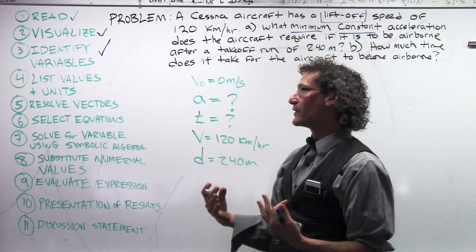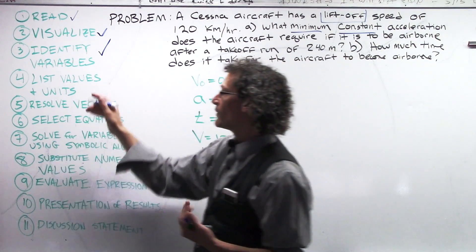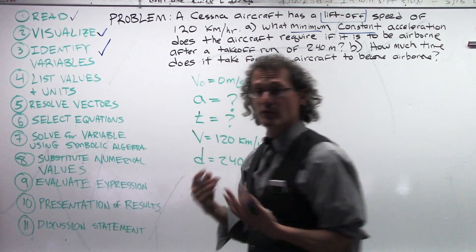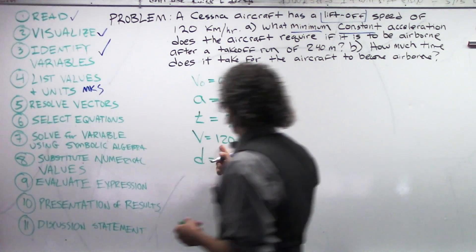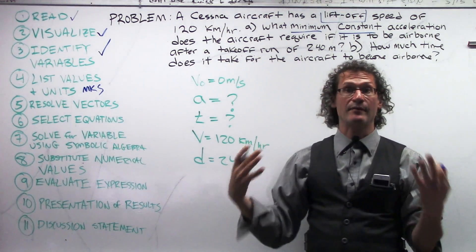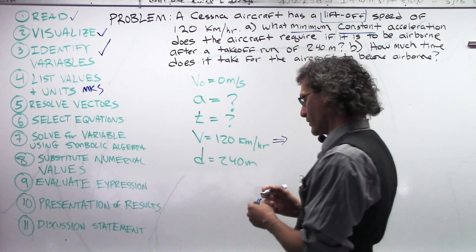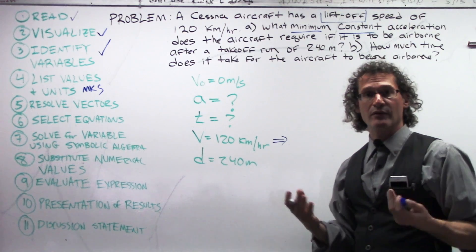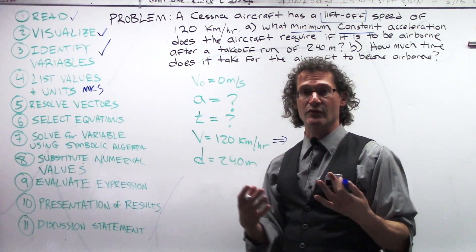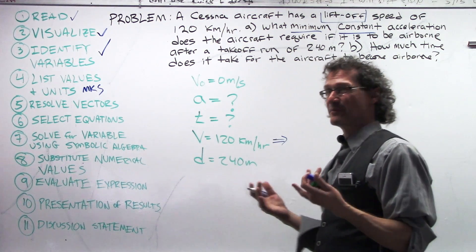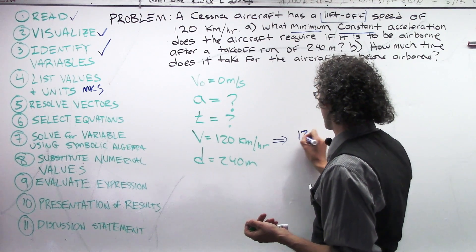We're going to list values and units. Well, we've done that for the ones we can. But at this point, we also will convert units to the MKS system. So, remember we want MKS here. 120 kilometers per hour, not MKS. We need meters per second. So, we need to convert this value so that it's meters per second. Well, we can use the train tracks. There is a short method that we can use to get this value. Pretty much you divide by 3.6. But I'll show you how we get that. Let's do the train tracks formally just so we have it down.